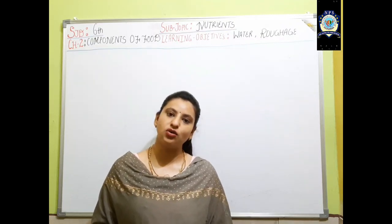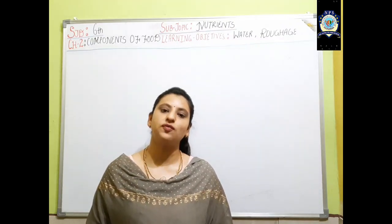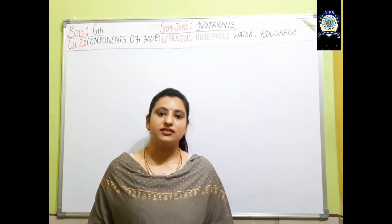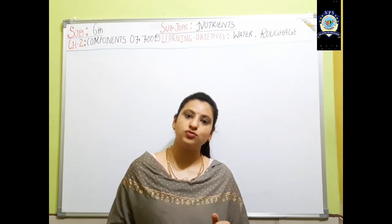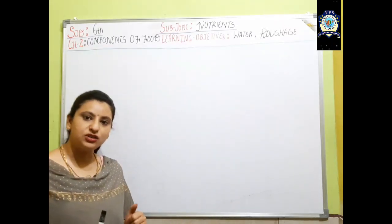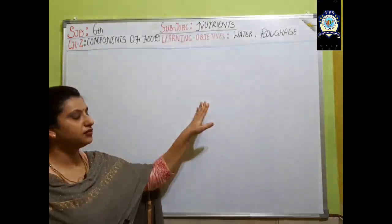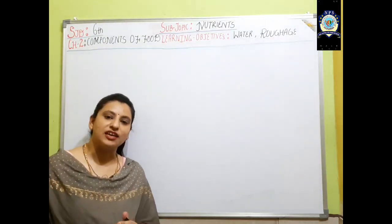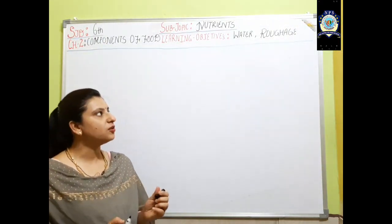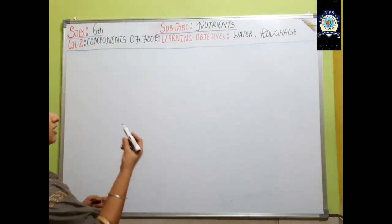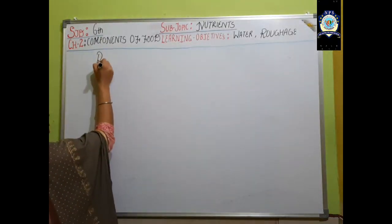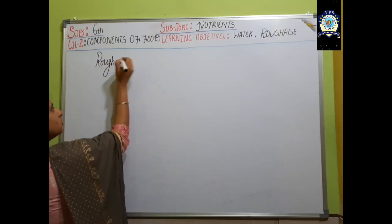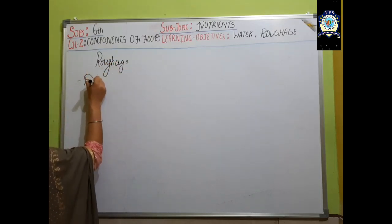Today we are going to learn about traditional nutrients which are also very important for the good growth of the body. The learning objectives for today are: we will learn about water and we will learn about roughage. The first objective is roughage, which is also called dietary fiber.